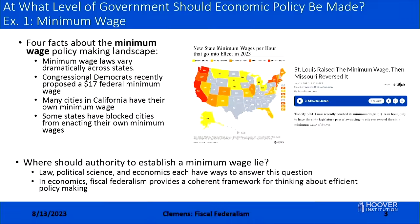Let's start with the minimum wage. First, minimum wage laws vary dramatically across the United States. The federal minimum wage is currently $7.25 an hour, while some state and local minimum wages are now in excess of $15 an hour — tremendous variation in what the effective law is in various labor markets around the country.